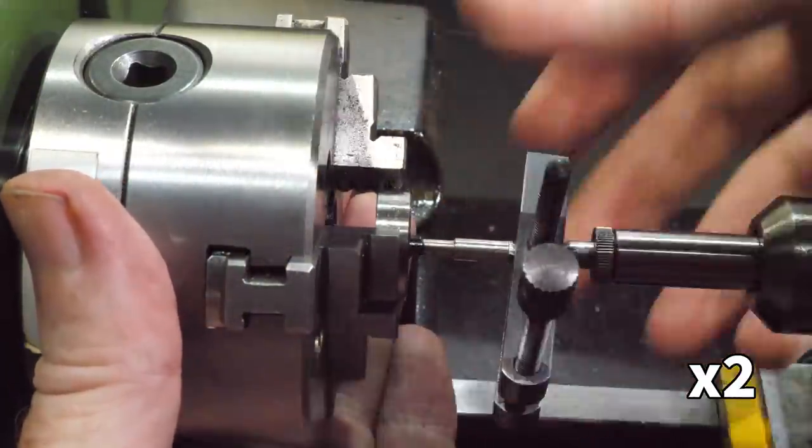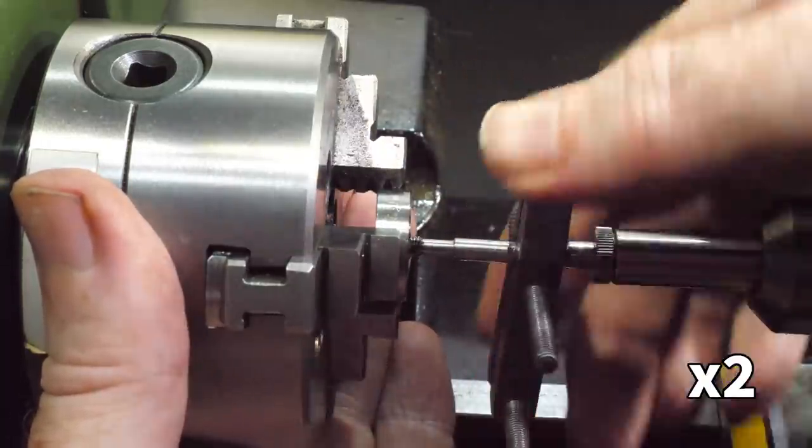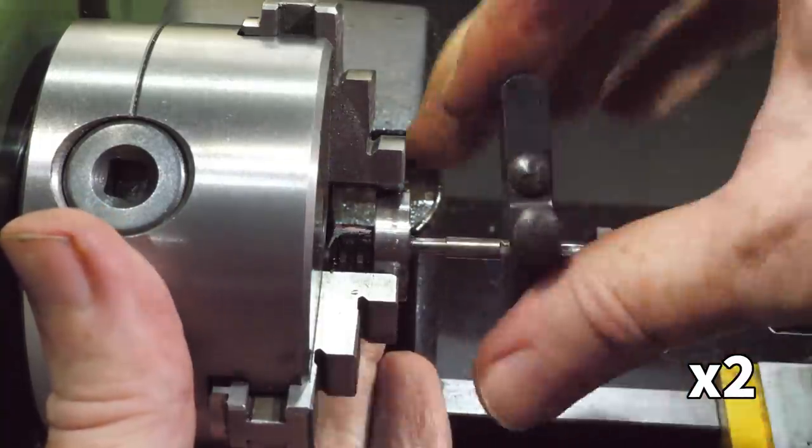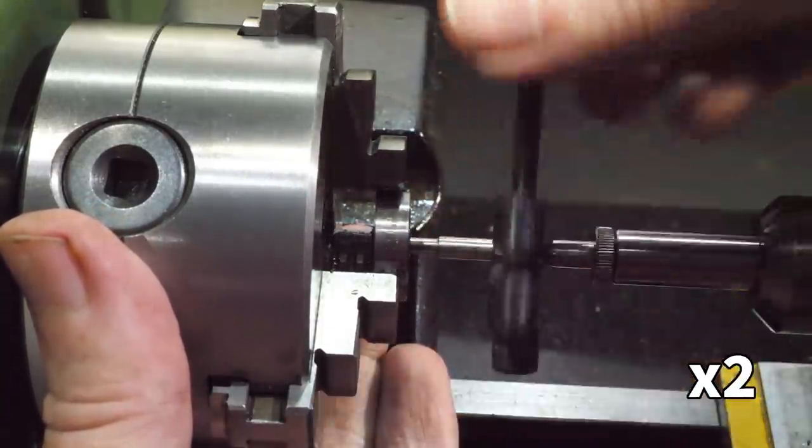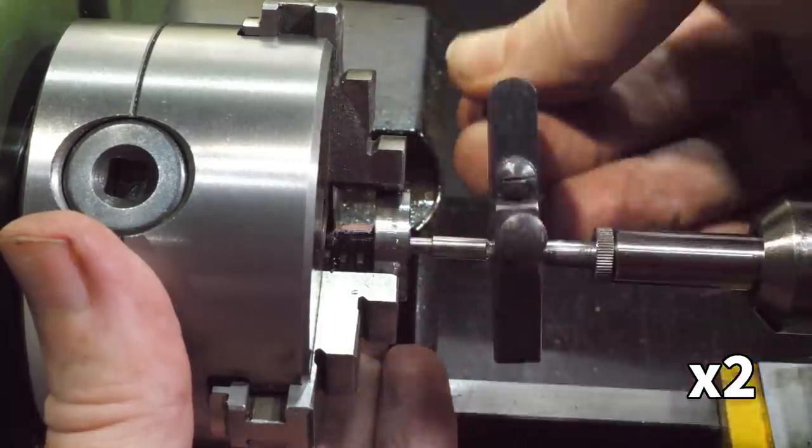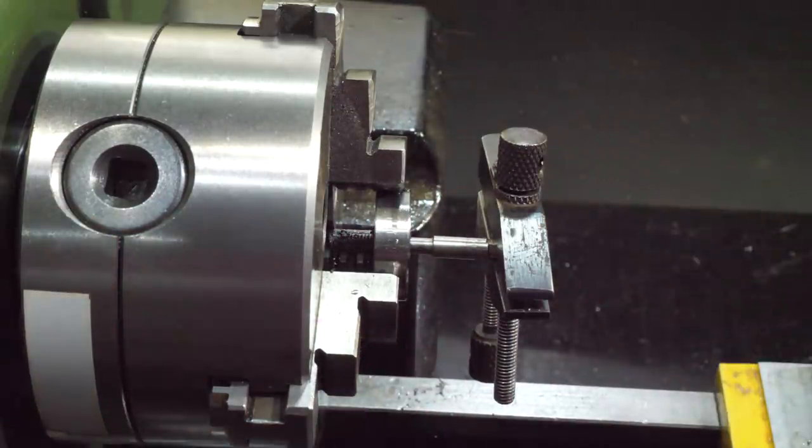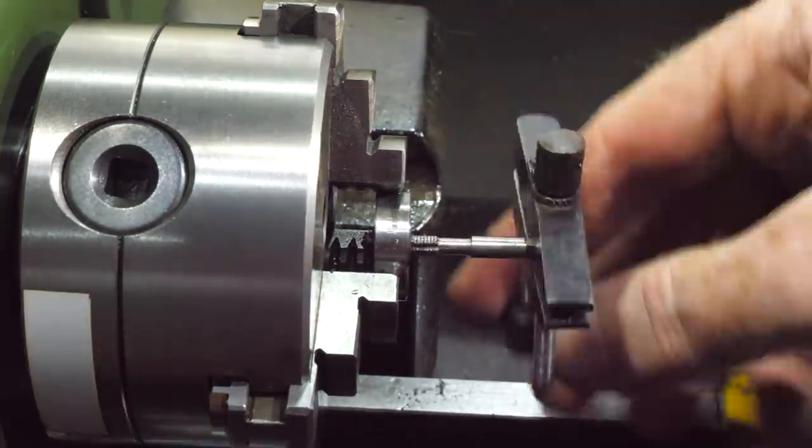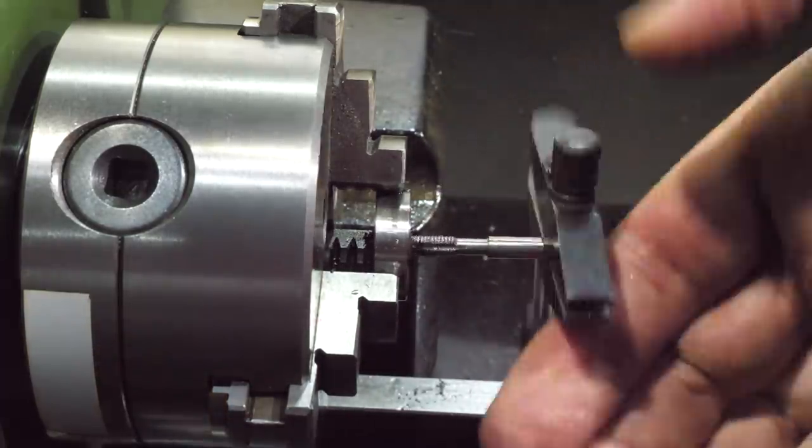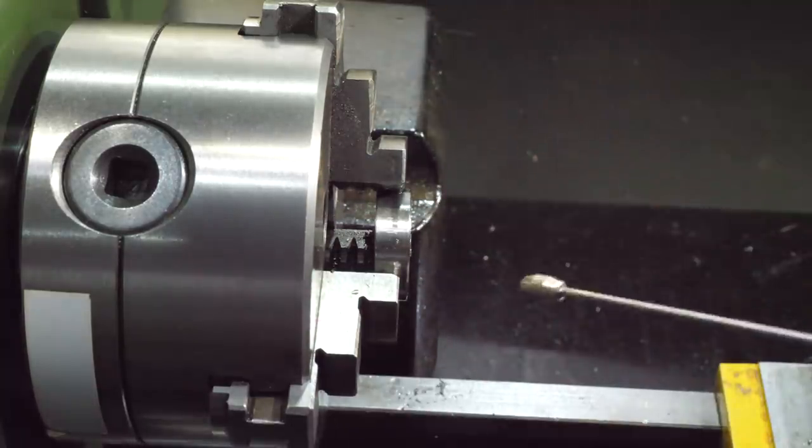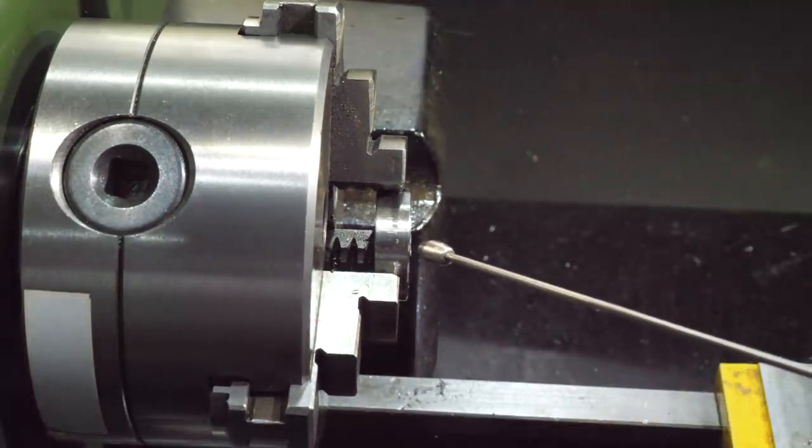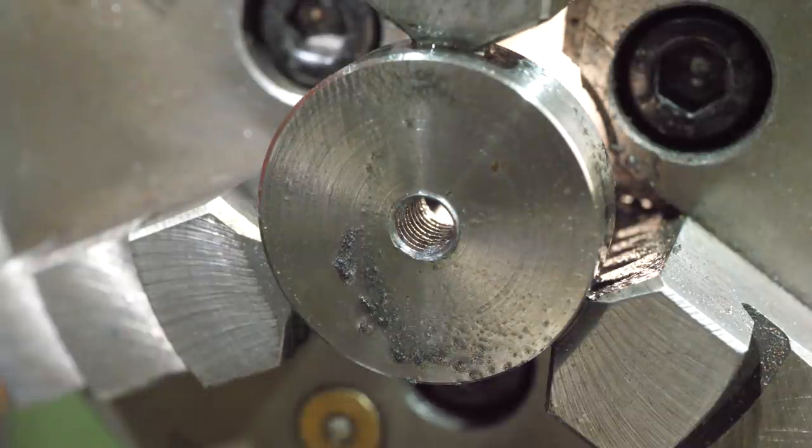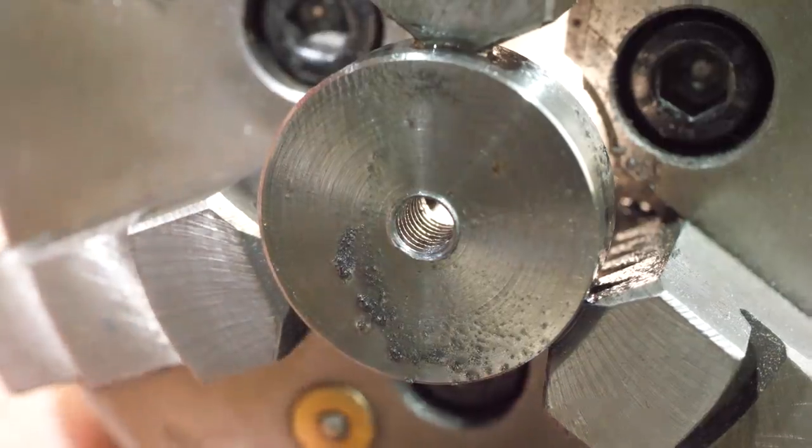Off camera I switched to a toolmaker's clamp, which allowed me to get a really firm grip on the tap shaft. Eventually I managed to finish the thread, and from a casual inspection it looks reasonably well formed. It'll be more obvious how well formed they are once the cutting edges have been machined.